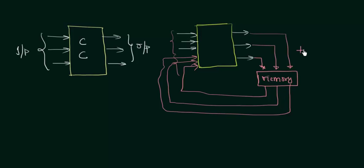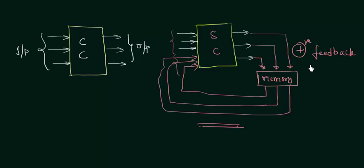There is a positive feedback in the sequential circuit — the signal going from the memory element back into the circuit is the feedback. There is also a memory element involved. So the only difference between a combinational and a sequential circuit is that there is a positive feedback and a memory element to store the previous outputs.